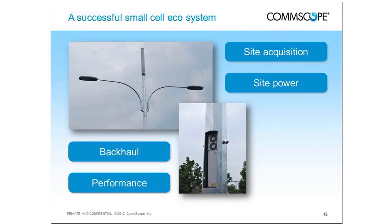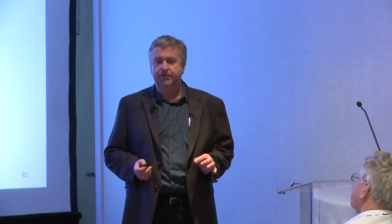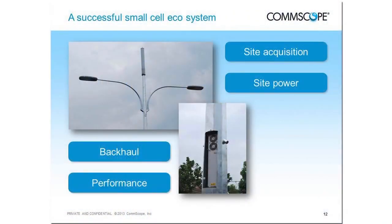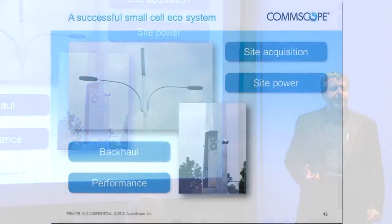No matter which of those applications — DAS, PICO, outside-in, mini macro, Wi-Fi, or others — you pick for a specific venue, there are four fundamental problems that still have to be solved. First is site acquisition: how do you get permission to put anything on any site? Second is power: every radio needs power, and in historical venues, getting permission to run power is not always simple. Third is backhaul: are we going to use fiber, which is often the right solution, or sometimes a microwave solution?